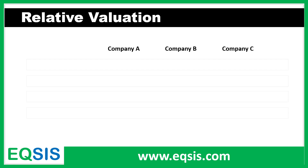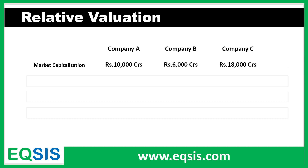Let's say there are three companies — Company A, Company B, and Company C — valued at different prices. Company A's market capitalization is 10,000 crores, Company B is valued at 6,000 crores, and Company C at 18,000 crores. By looking at this, if I ask which company is overvalued or undervalued, it's unfair because the information is very limited. Amateurs often feel 18,000 crores is overvalued and 6,000 crores is undervalued just by looking at the value, which is not fair.